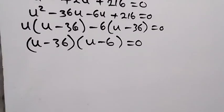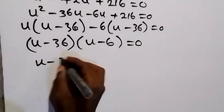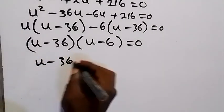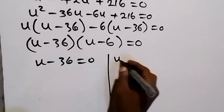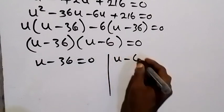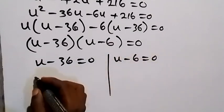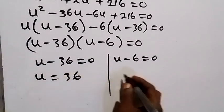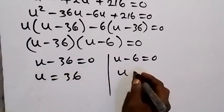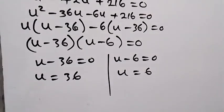We have two cases: u minus 36 equals 0, giving u equals 36; and u minus 6 equals 0, giving u equals 6.